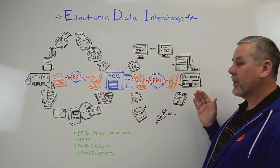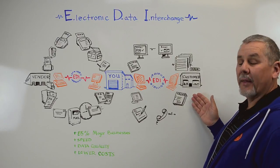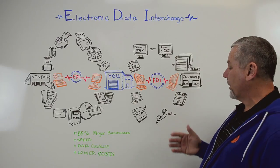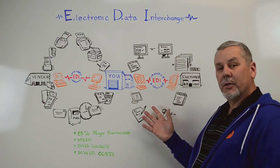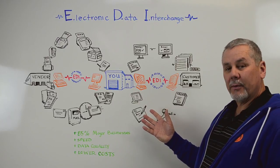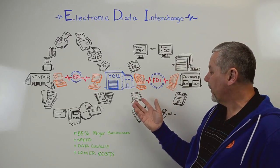Over here with your customers, your customer wants to purchase something from you, so they're going to order that from you. Again, they could mail it like over here, but in this instance, we'll say that they're going to call it in. Someone on your side is going to have to write this down, and then they're going to enter it into some kind of a system for fulfillment.